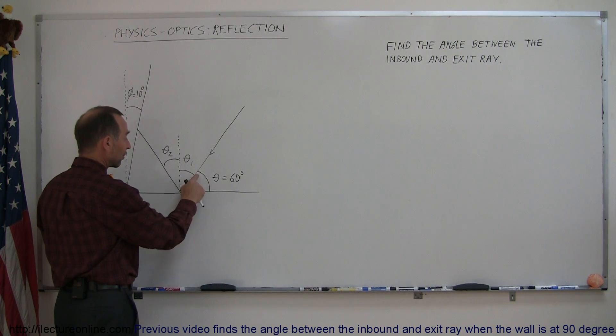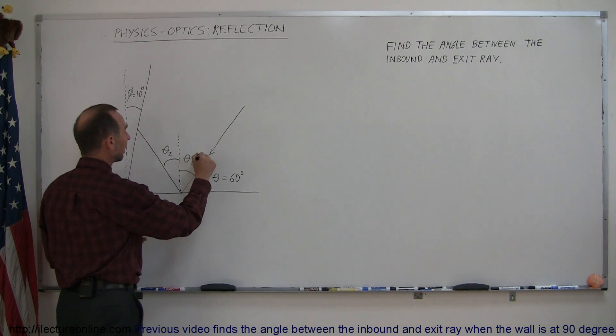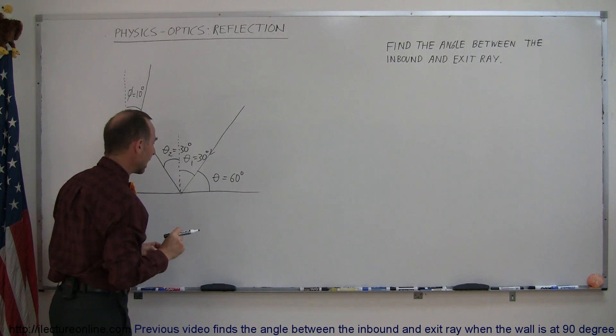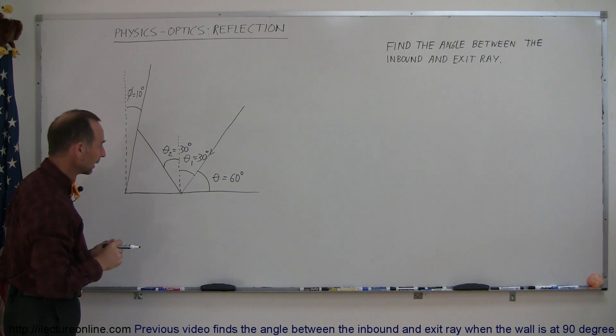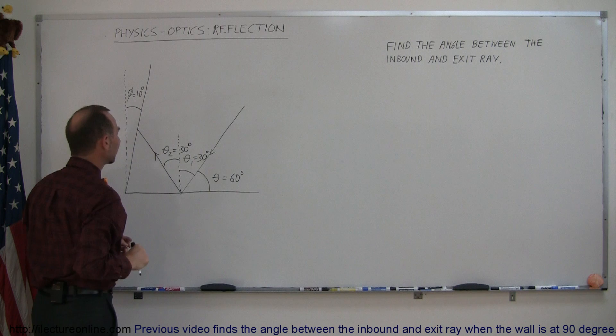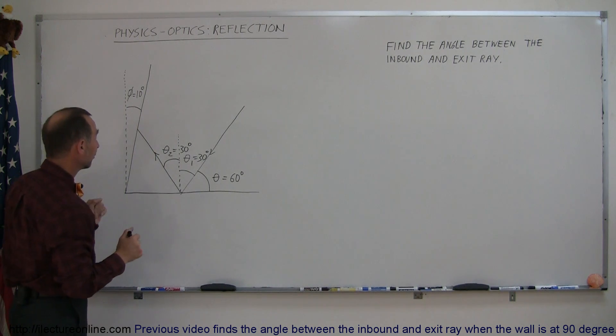Since this is already a 60 degree angle, this must be a 30 degree angle which means that this must also be a 30 degree angle. Here's the inbound ray, here's the reflected ray, now it reflects off of this surface. Now the question is how will it reflect off of that surface?